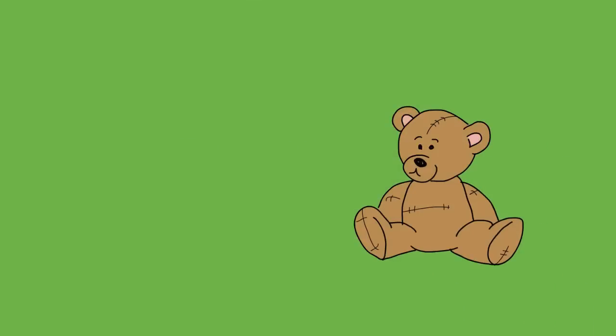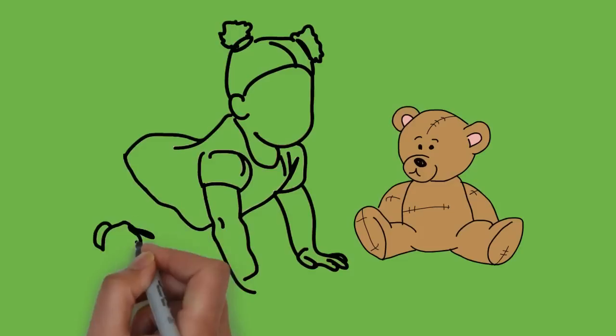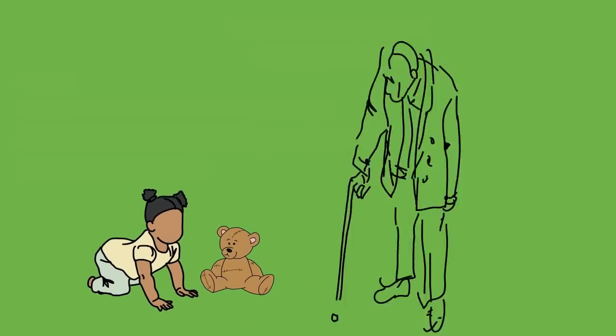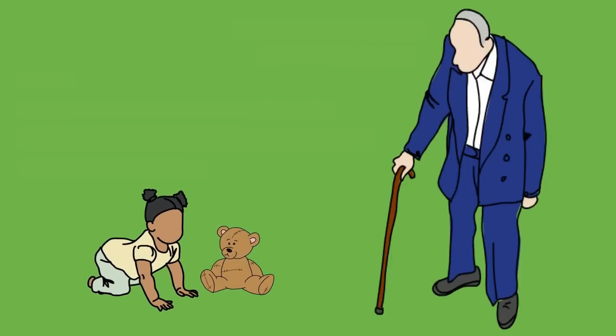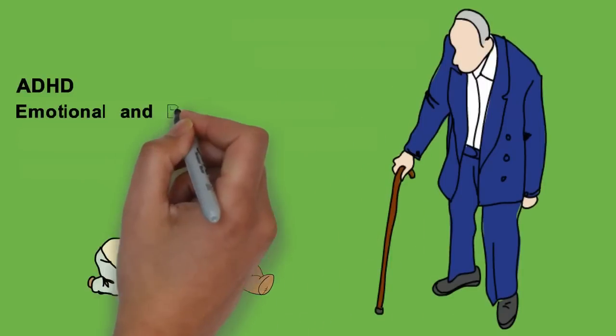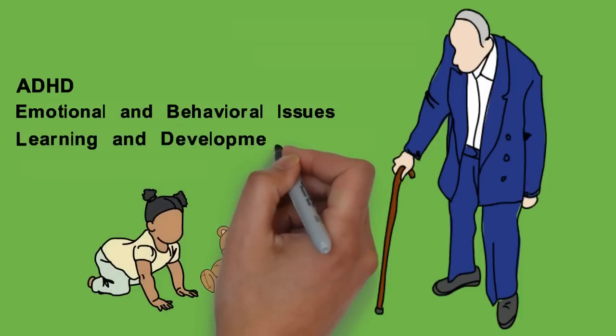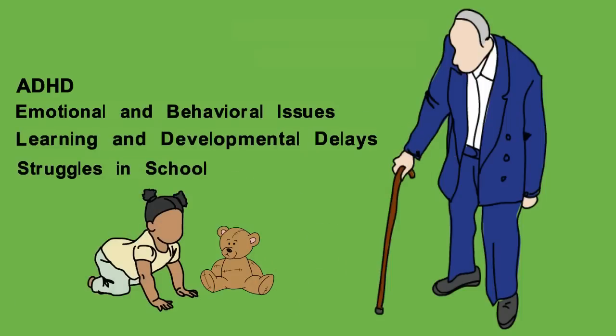With neurofeedback, anyone can improve their brain. We've trained children, teenagers, and adults from age 2 to 92. For children, it's often used for ADHD, emotional and behavioral issues, learning and developmental delays, and struggles in school.